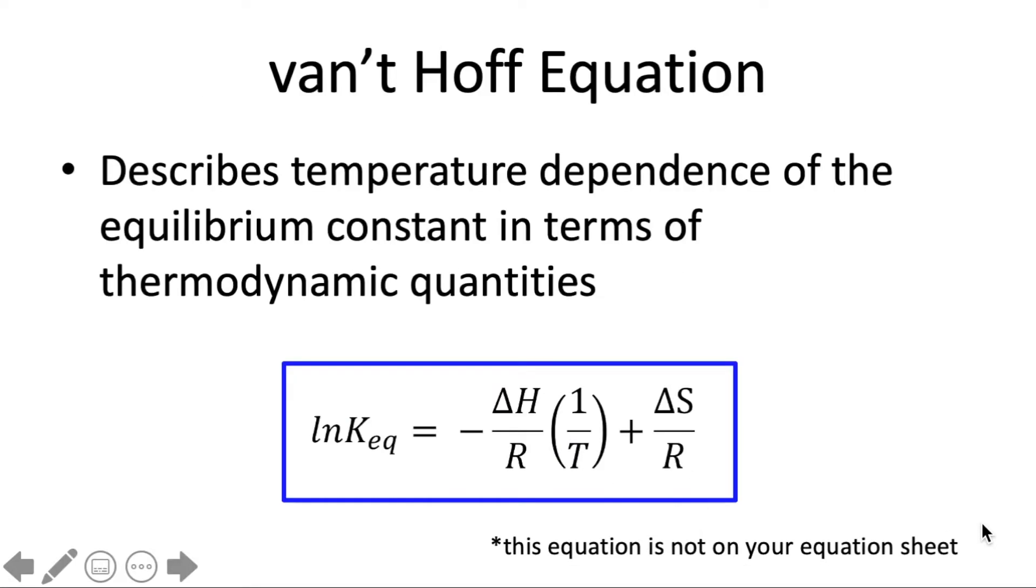And here the natural log of KEQ equals the negative delta H over RT plus delta S over R. And this equation describes the temperature dependence of the equilibrium constant in terms of thermodynamic quantities. So we can say how K will change based on the values of delta H and delta S for that reaction. This does assume that delta H and delta S stay constant over the temperature range that we're looking at which is a pretty good assumption because we'll just be between 0 and 100 degrees in our experiment today.